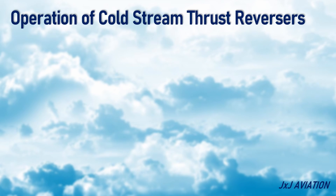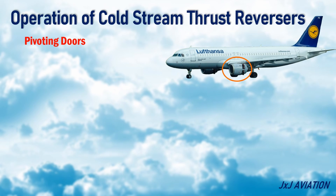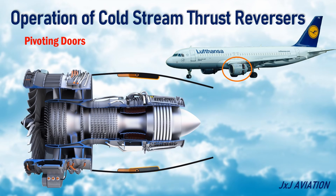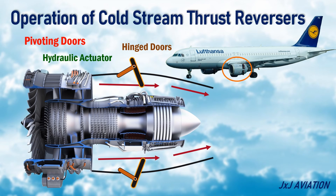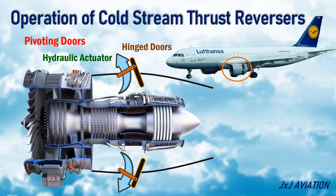In the Pivoting Doors Reverser, there are hinged doors installed on the engine nacelle. During normal engine operation, the doors are flush with the nacelle surface, so they do not obstruct the airflow. When thrust reversers are required, a hydraulic actuator opens the doors. When the doors open, a section of the door deflects inside the nacelle and the other section opens outward. The door blocks the air flowing through the bypass duct of the engine and deflects it forward, causing the thrust to be reversed.